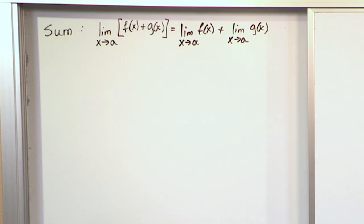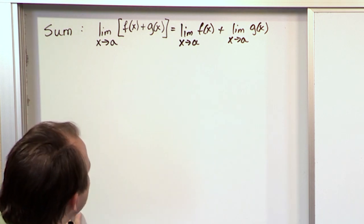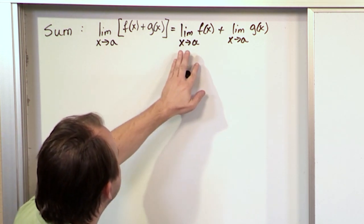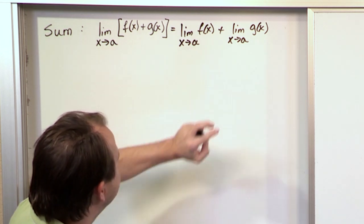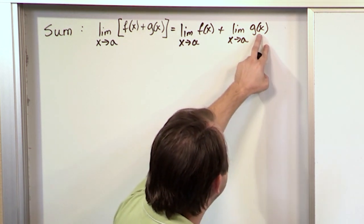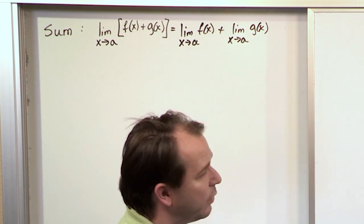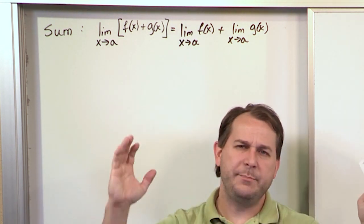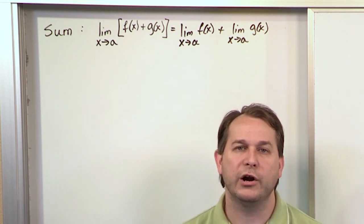Now make sure you understand that. What I'm basically saying is if I give you two functions that are added together and ask you to find the limit, then all you really have to do is find the limit as x approaches the same number a of the first function, and then also separately the limit of the second function going to the same point, and then I can add the results. So it's kind of like if I have a big function that's just a bunch of things added together, I can take the limit of each individual part.